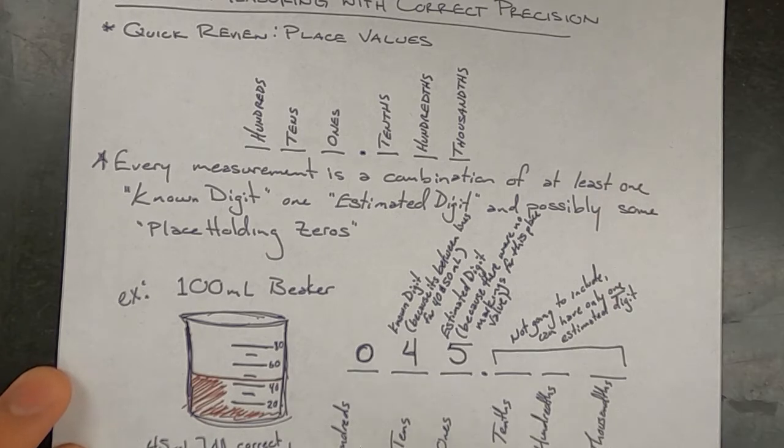If someone tried to say 45.2 milliliters, this is not a valid measurement for this tool because it tries to give more detail than this beaker would let us get.